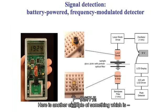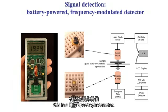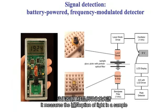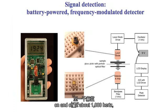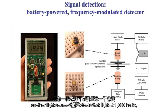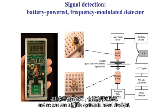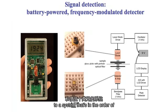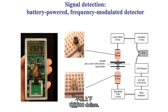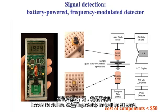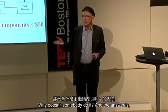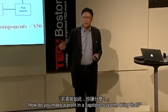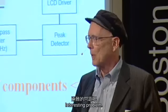Here's another example: a little spectrophotometer that measures light absorption in a sample. The neat thing is it has a light source flickering at about 1,000 Hz and a detector synchronized to that frequency, so you can run it in broad daylight. It performs about equivalently to a system costing on the order of $100,000, and it costs $50 — we could probably make it for 50 cents if we put our minds to it. Why doesn't someone? Because how do you make a profit in a capitalist system doing that?